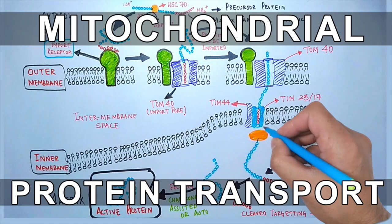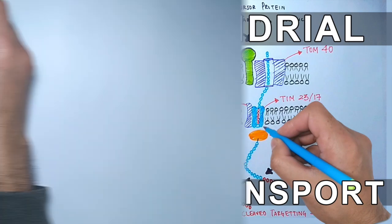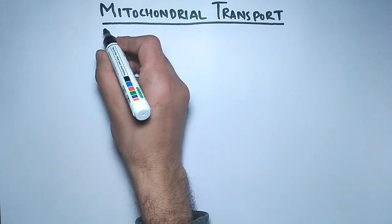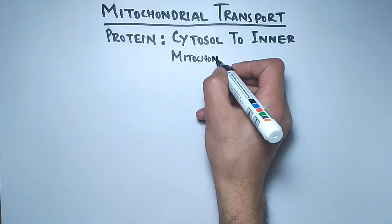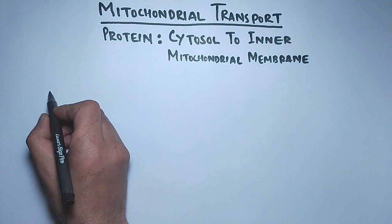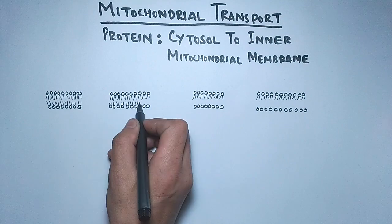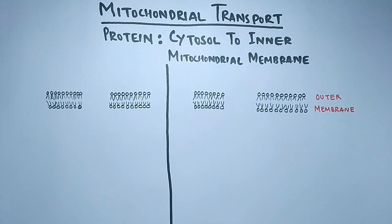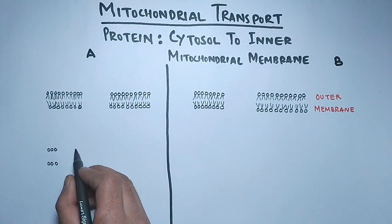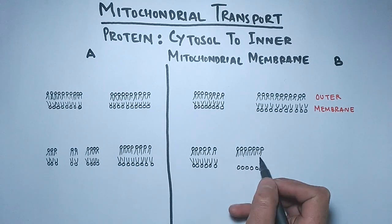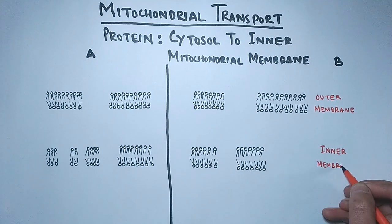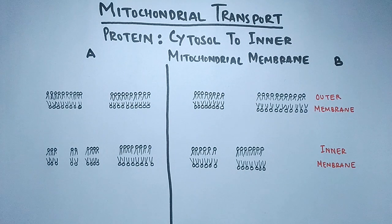In the previous video we discussed protein transport into the mitochondrial matrix. Now in this video we'll be discussing protein transport into the inner mitochondrial membrane. For this, there are two major pathways that mediate the transfer of cytosolic proteins to the inner mitochondrial membrane. Translocons are present in both membranes of mitochondria to facilitate this transport, and it is through these translocons that proteins cross the respective membranes.